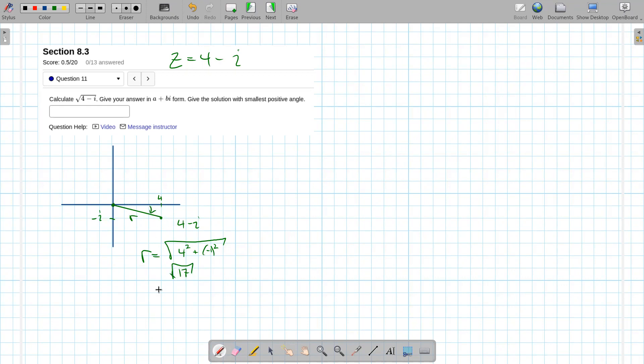And then the angle for that right there is just the arc tangent. So theta would be the arc tan of the y negative one over the x four, and we can calculate that angle on a calculator.